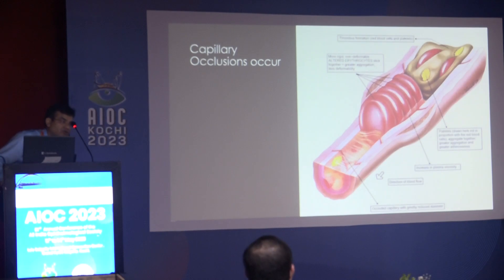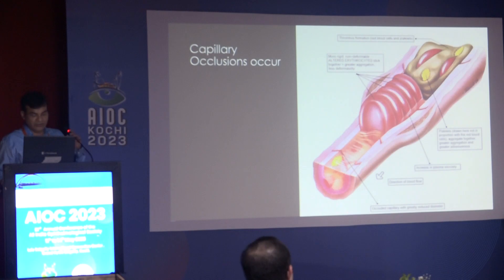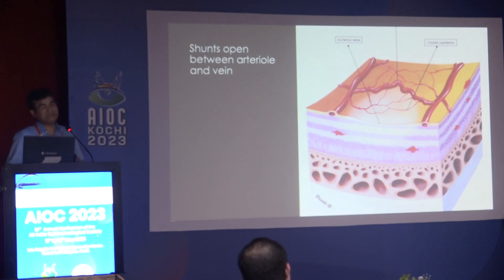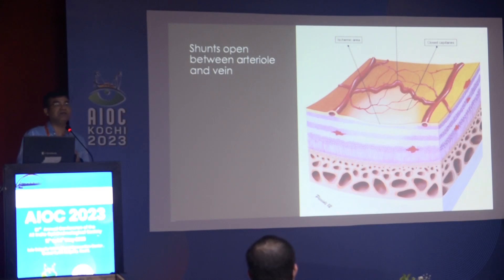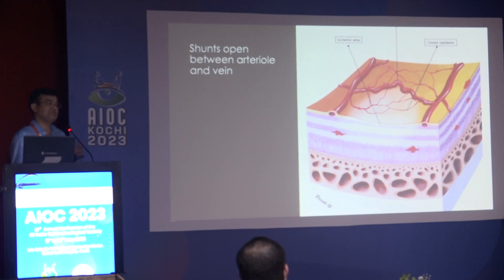This is how clotting happens — because of the more rigid, non-deformable erythrocytes which get stuck together, and also because of the platelets which are drawn there and become stuck to each other. Normally shunts are present in the retina but they don't open up. Nature's way of increasing blood supply to the ischemic retina is that these natural shunts available between arterioles and venules start opening up — and these are the IRMAs.